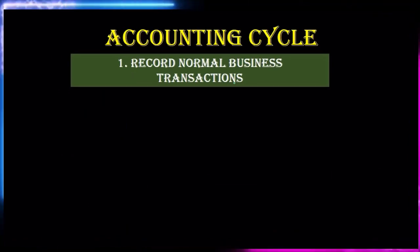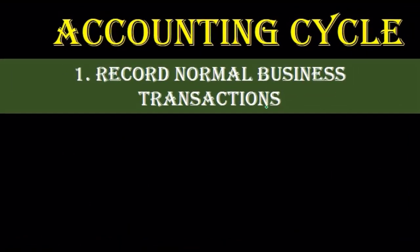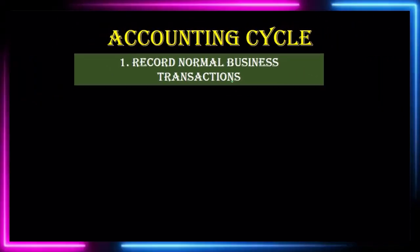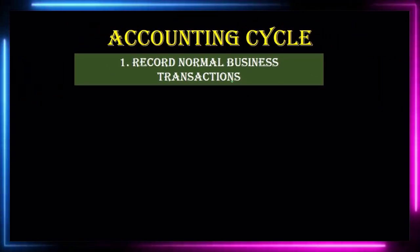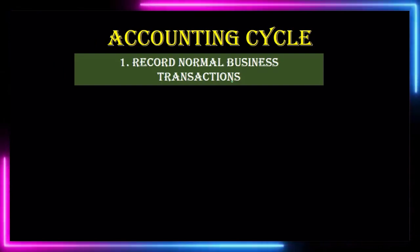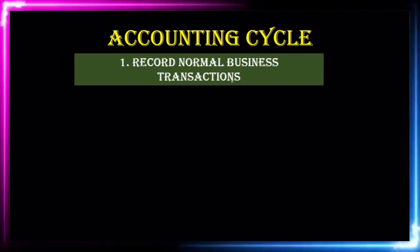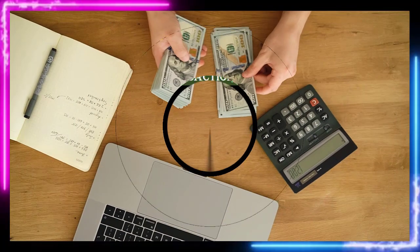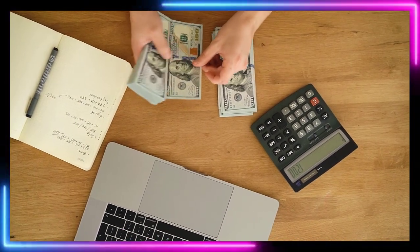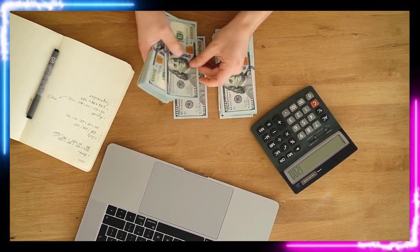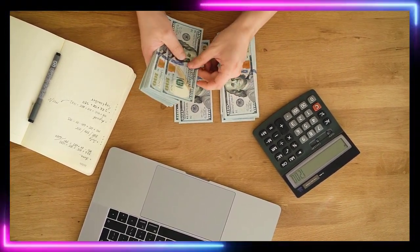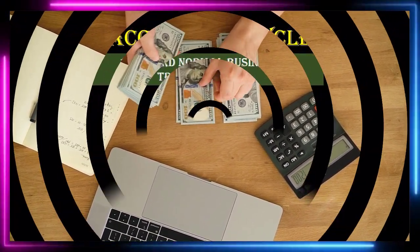Starting again with step one: record normal business transactions. That's really what's going on, and it entails mainly everything we're doing throughout the entire month — the payroll department, accounts receivable, accounts payable, entering all the transactions, bills, invoices — everything is included in step one.